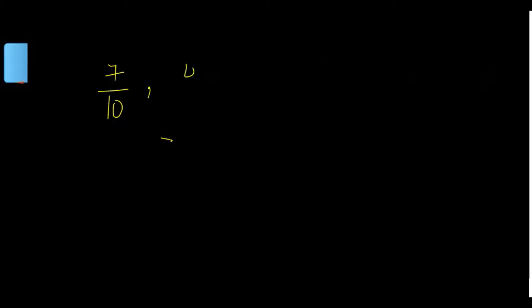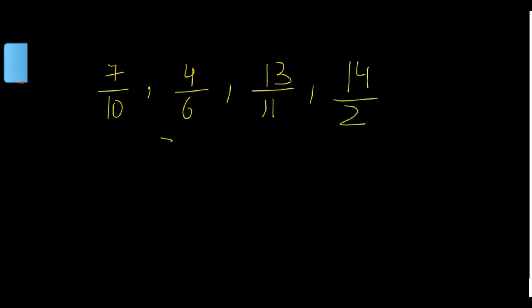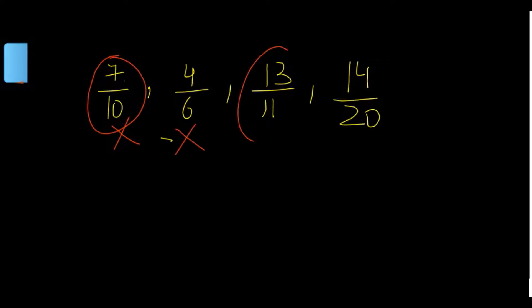Let's take more examples: seven by ten, four by six, thirteen by eleven, and fourteen by twenty. Which are improper fractions? Find where the numerator is greater than the denominator. Thirteen by eleven — the numerator is greater than the denominator, so this is an improper fraction. These fractions are called improper fractions.